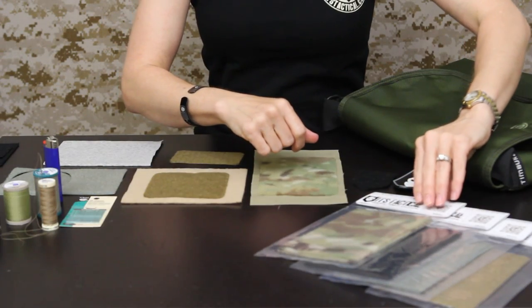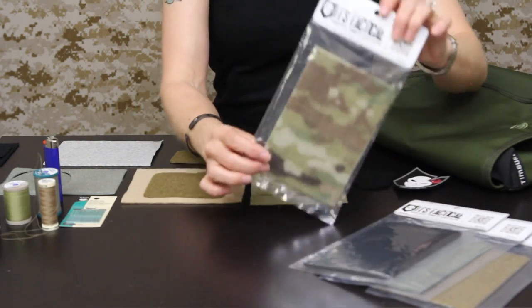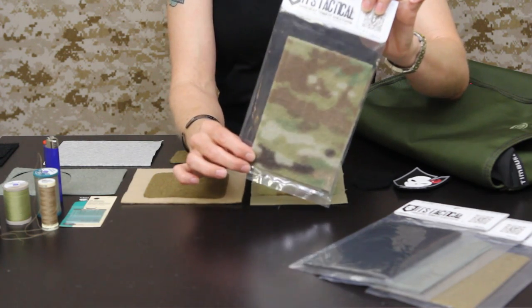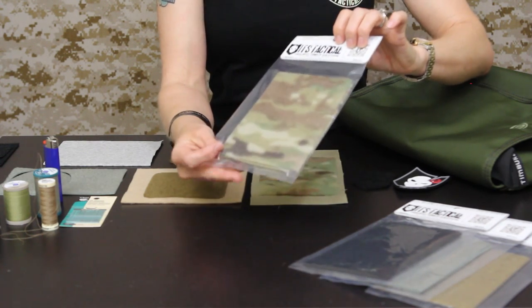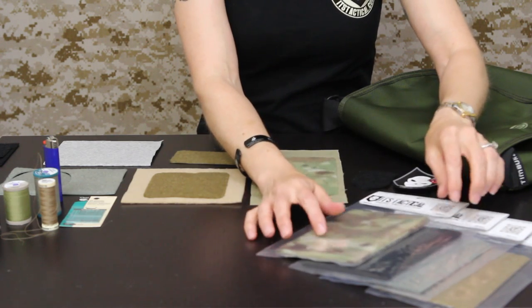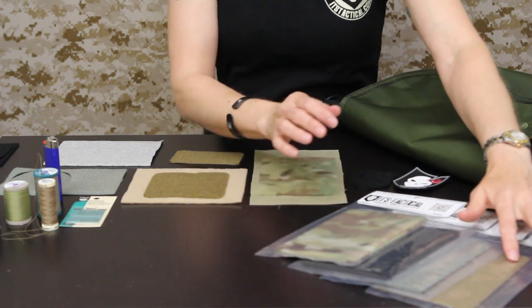Just to give you an idea of the products we're adding to the store, these are packages of two strips, each strip is four by six inches in length, and we have each color available separately so we have multicam, black, foliage and coyote brown.